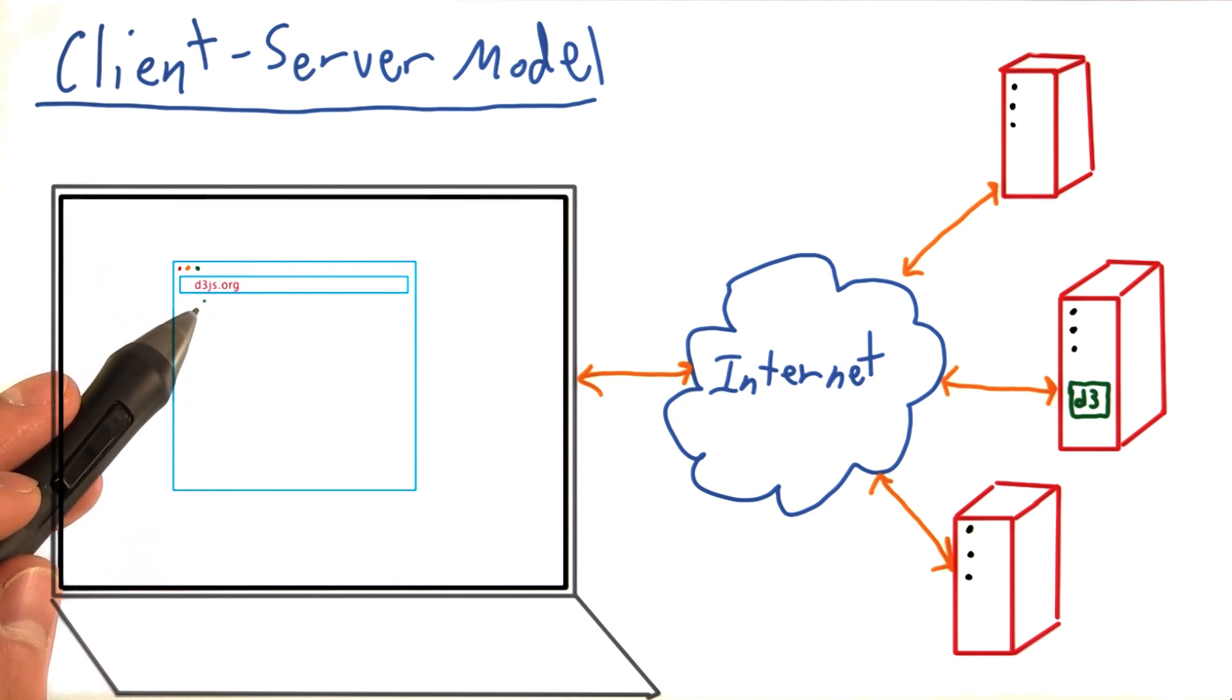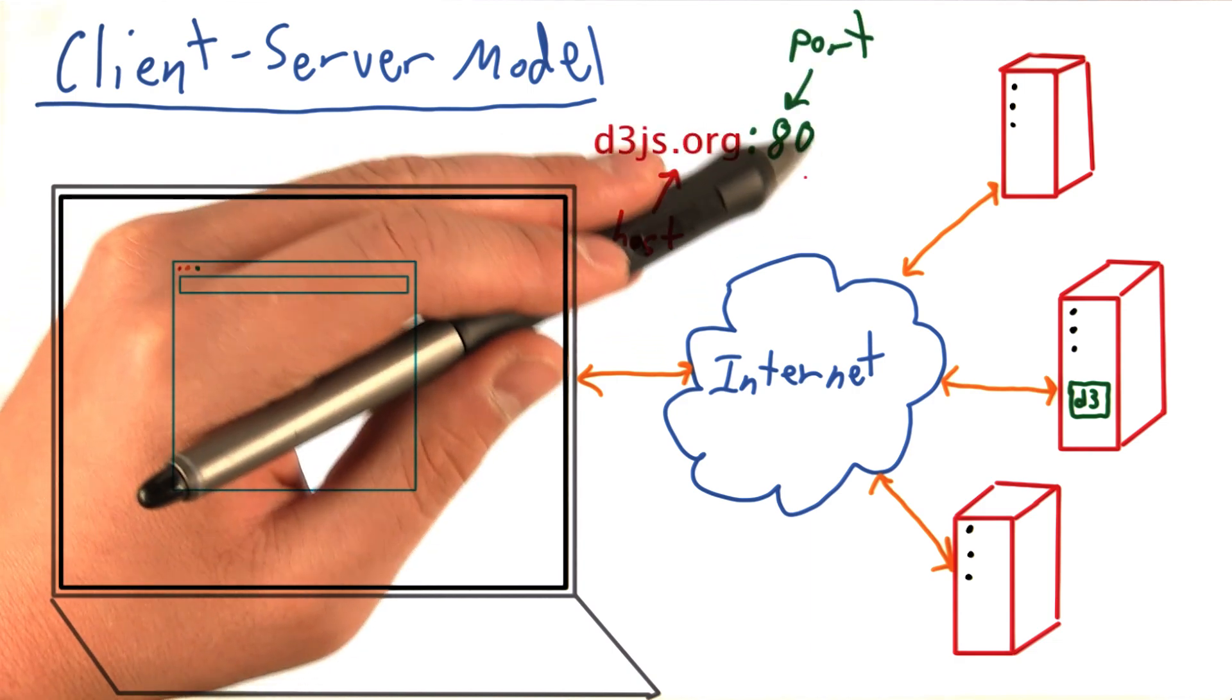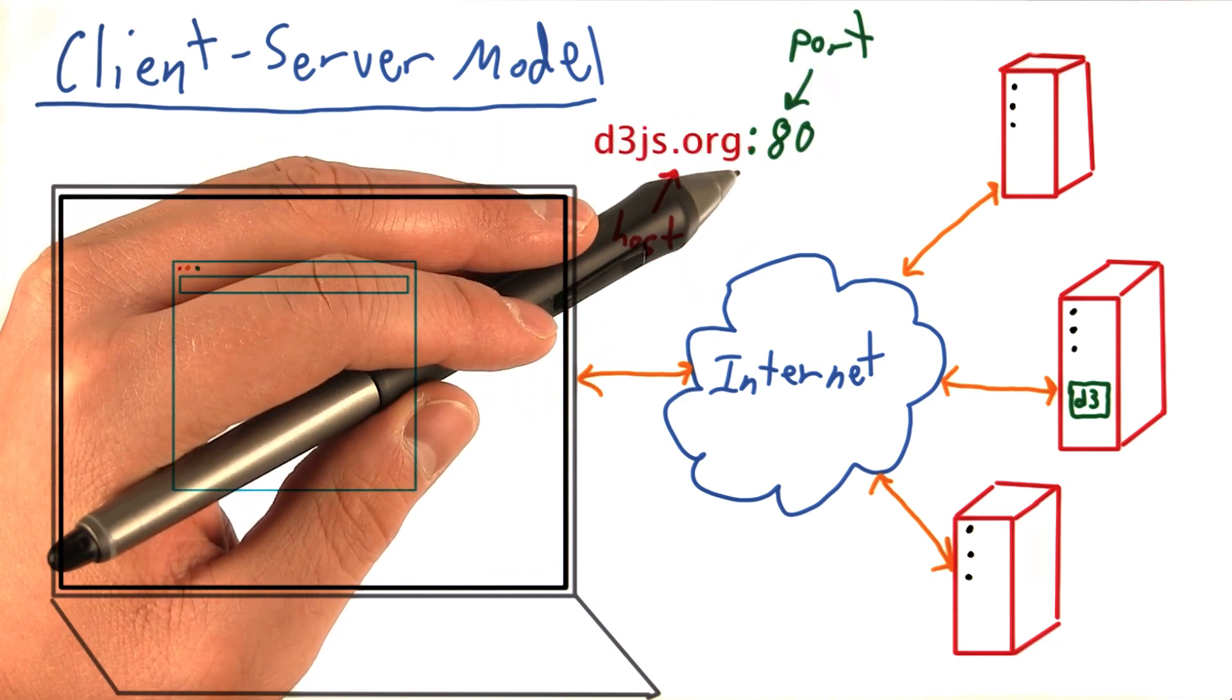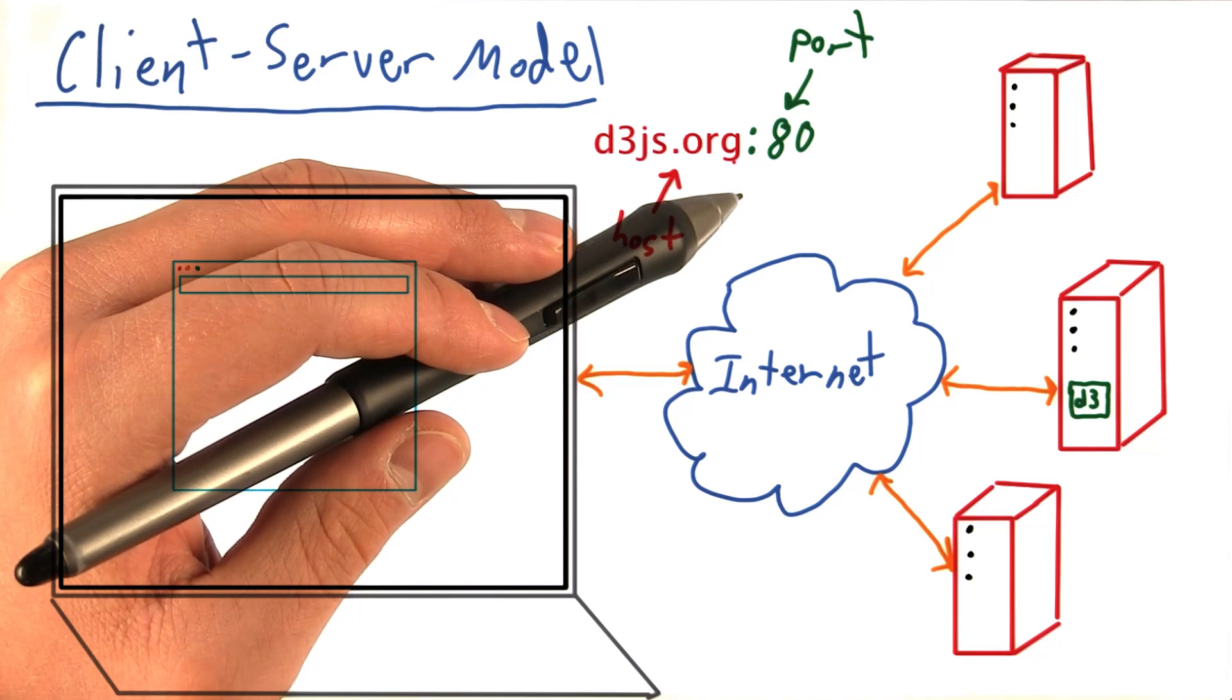You can think of the host name, in this case d3js.org, as the address of a building, or a hotel, or even an apartment complex. And the port of a server can be thought of as a room or apartment number.